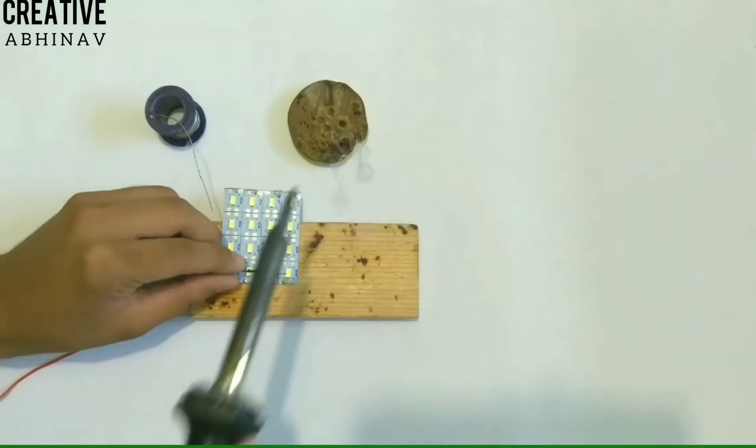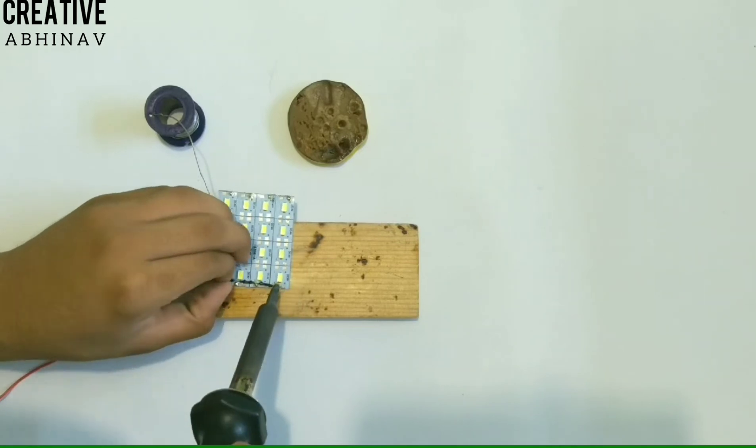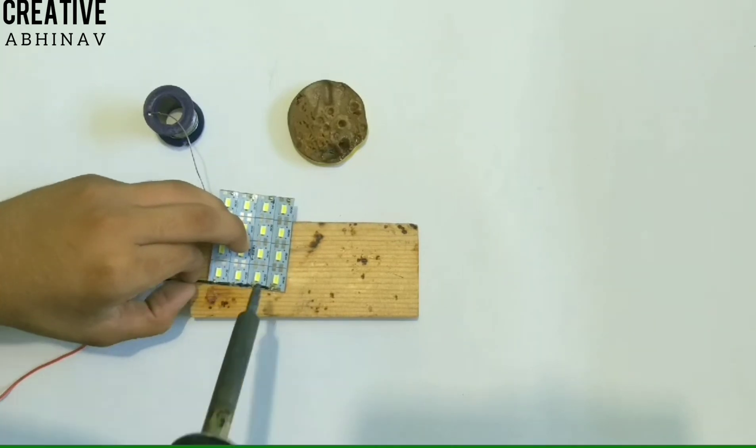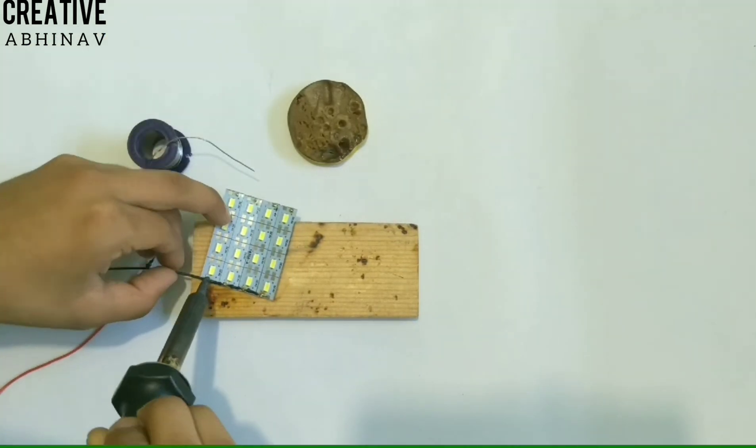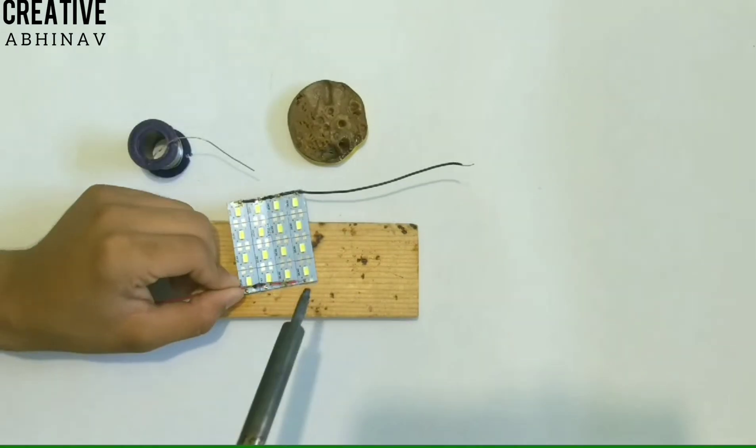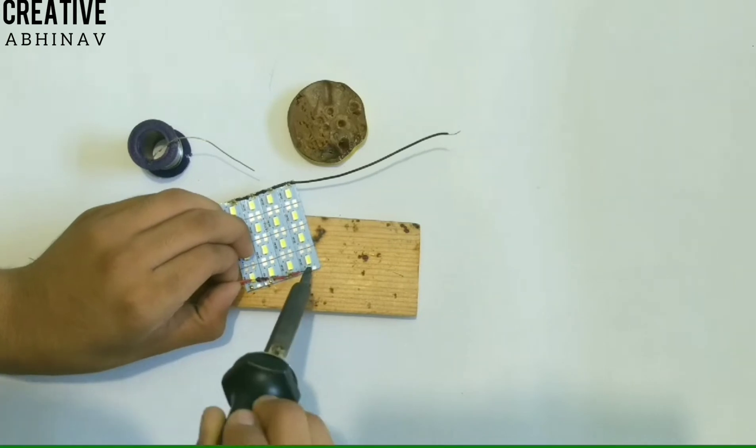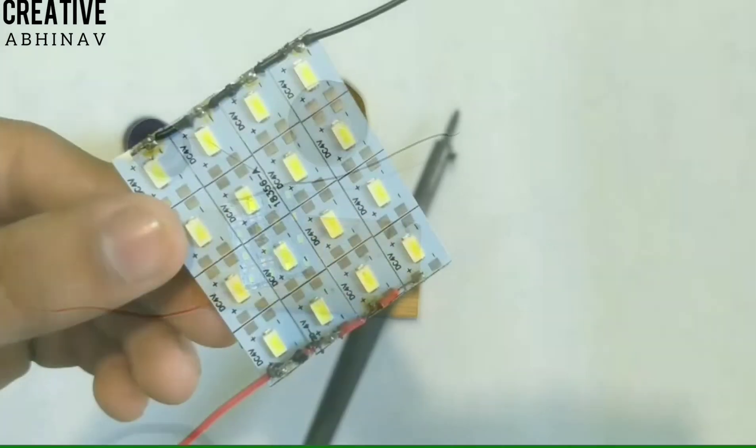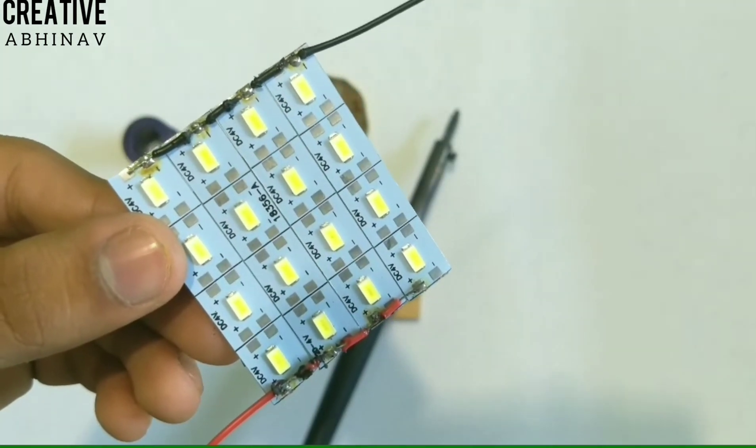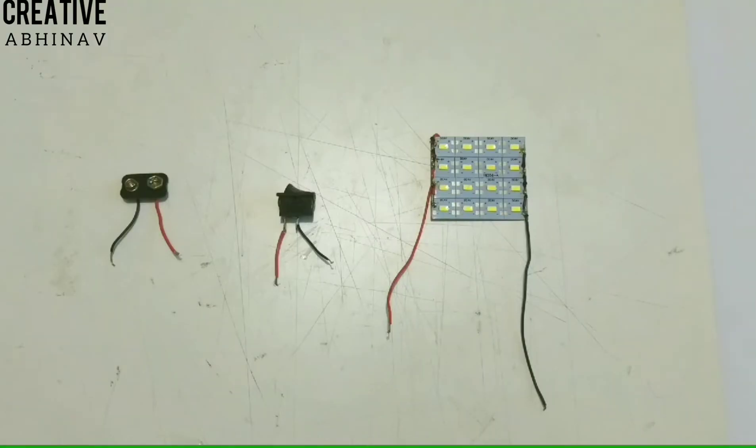Now guys, finally we have to solder positive and negative wires on our LED strip, switch, and 9-volt battery connector. Now we have to join wires of LED strip, switch, and 9-volt battery connector.